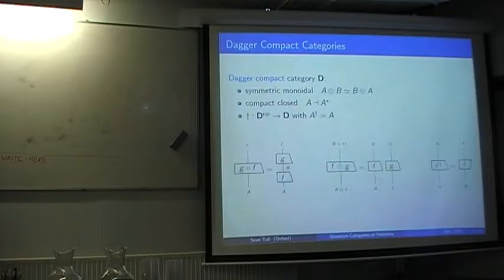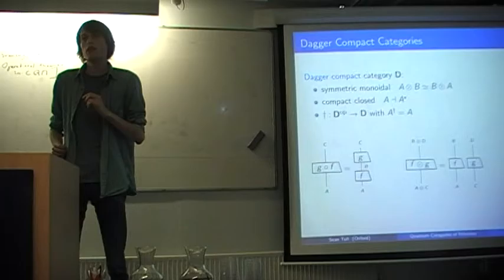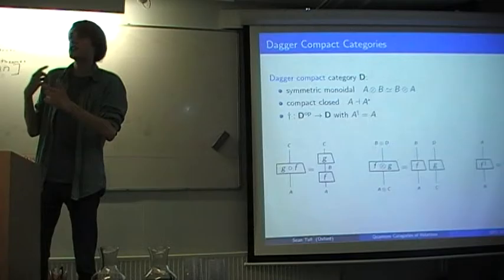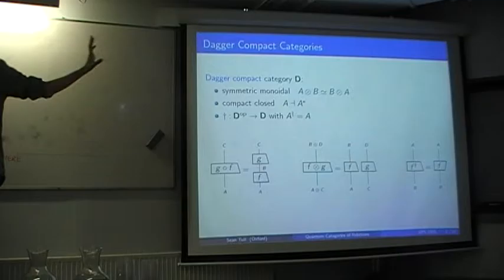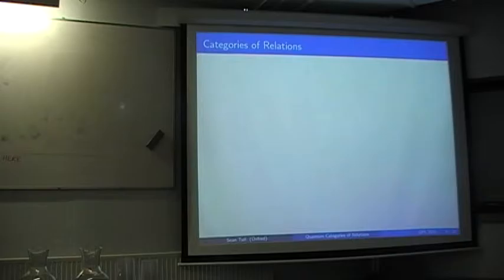I'll quickly go over what a dagger compact category is. It's a symmetric monoidal category, so we have a spatial composition of systems. It's compact closed, meaning we have something analogous to the dual of a finite dimensional Hilbert space. It comes with this dagger, which is like the adjoint of a linear map. They have a nice graphical calculus where morphisms go from the bottom to the top: the left is usual composition, the middle is spatial composition, and the dagger is depicted as flipping the box upside down.